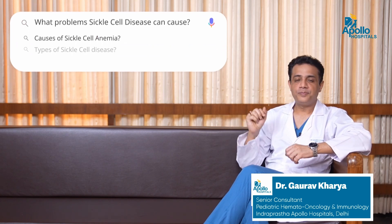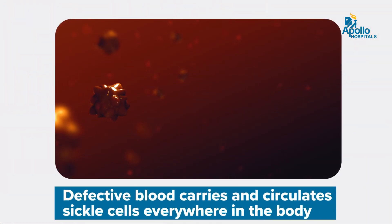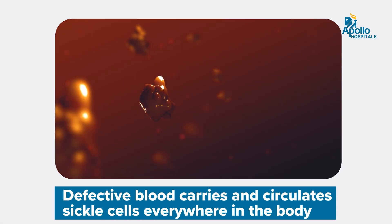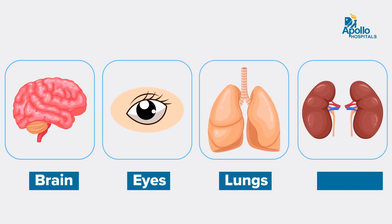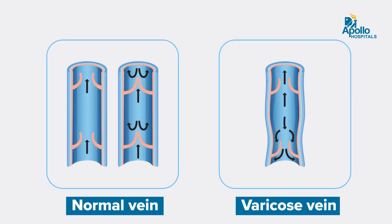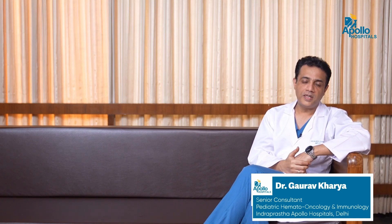Sickle cell disease is a multi-system disease. The defective blood carrying these sickle cells circulates everywhere in the body, so technically it can affect every part — brain, eyes, lungs, kidneys, gonads, and every other part. Typically this disease manifests as anemia and also as veno-occlusive or painful episodes. This is the commonest presentation of sickle cell disease, but it can affect any part of the body.